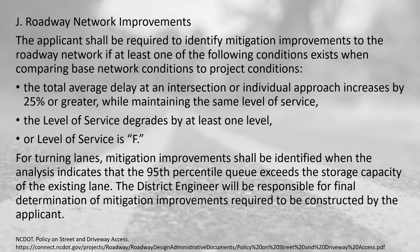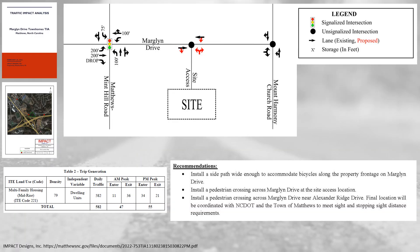Here's another state policy stating that the applicant should be required to identify mitigation improvements to the roadway network if at least one of the following conditions exists: total average delay at the intersection or an individual approach increases by 25% or greater while maintaining the same level of service band; the level of service degrades by at least one level, such as from C to D; or if the level of service is already F. Those are all conditions that may require mitigation improvements.